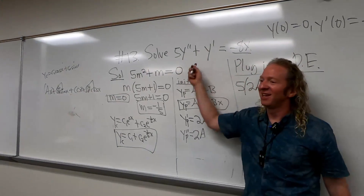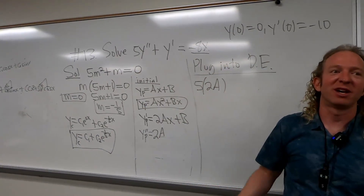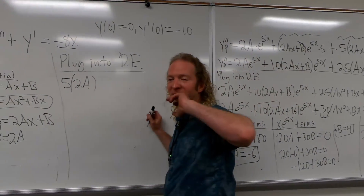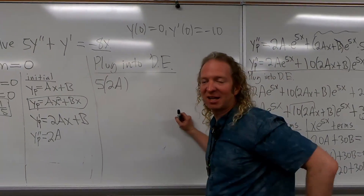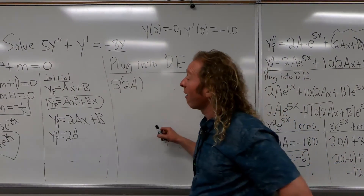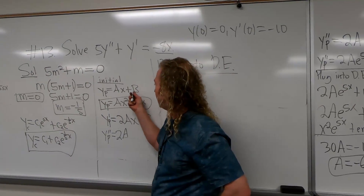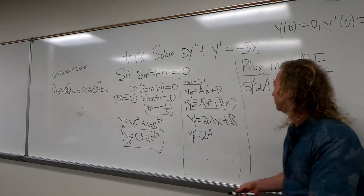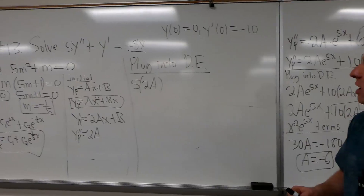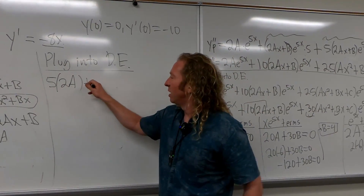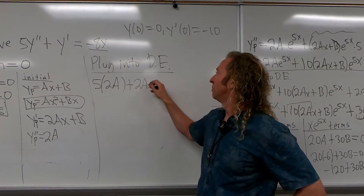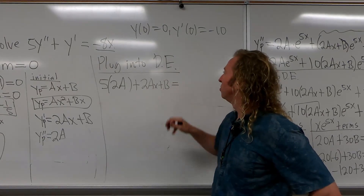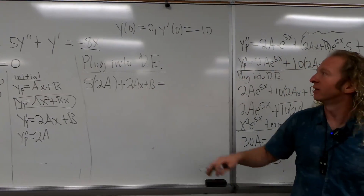So 5 times 2A plus — and then Yp prime is 2AX plus B — and that equals negative 8x.